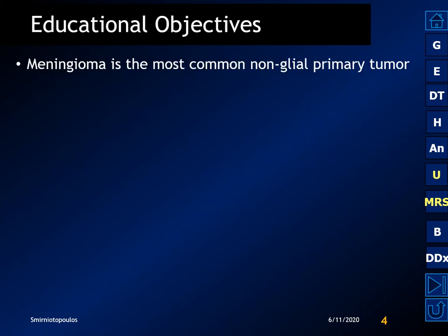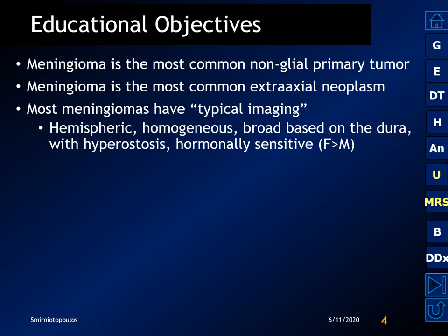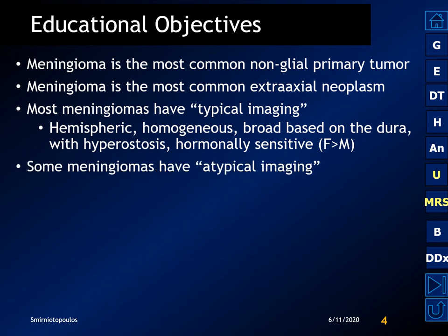Meningioma is the most common non-glial primary tumor. It's also the most common extra-axial neoplasm. The vast majority of meningiomas have a typical imaging appearance as a homogeneous hemispheric mass with a broad base against the dura, often with hyperostosis, and because they are hormonally sensitive, they occur twice as common in women as in men.